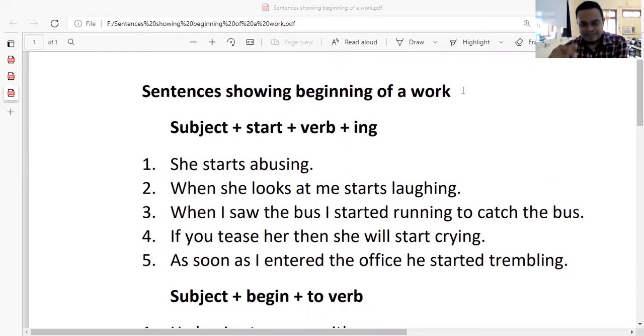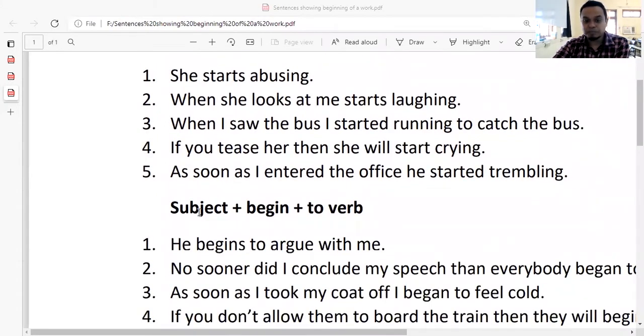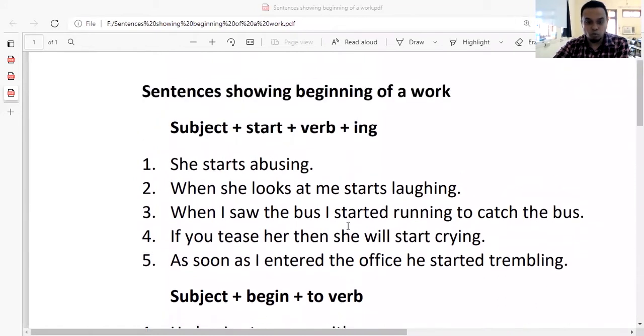To speak such sentences, you have two rules you can use for this particular construction. The first rule is subject plus start plus verb plus ing. The second rule is subject plus begin plus to plus verb.